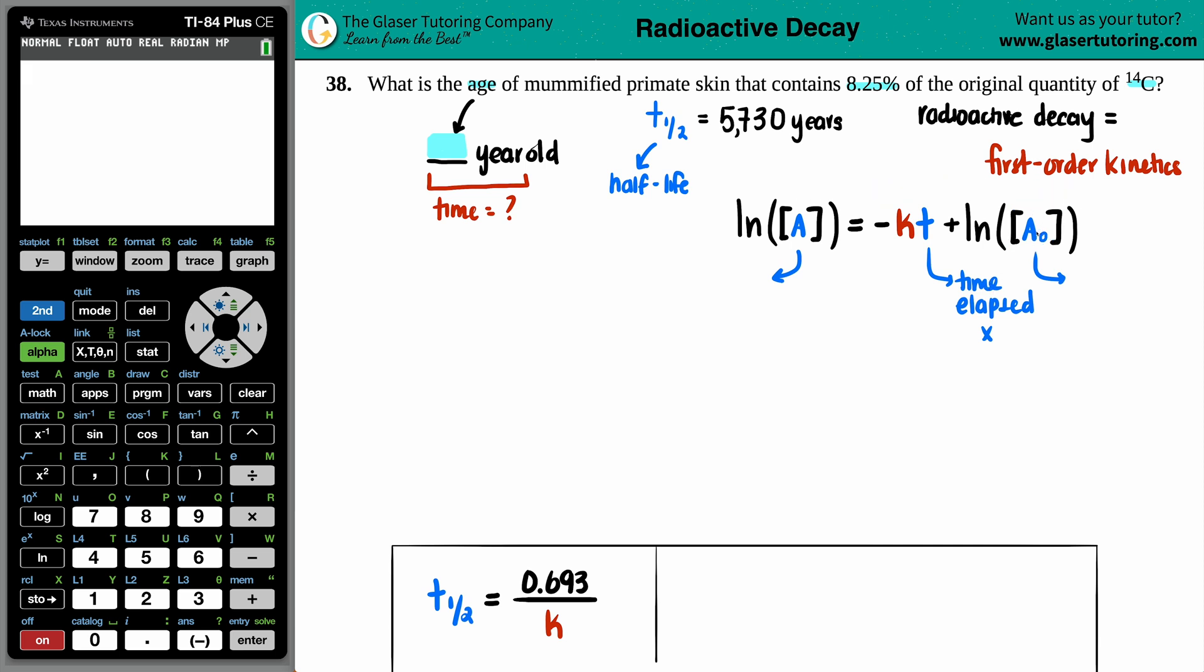This a notch, this zero, means that no time has gone by, and so this would be the initial amount. So the initial amount, which means that the other one has to be the final amount.